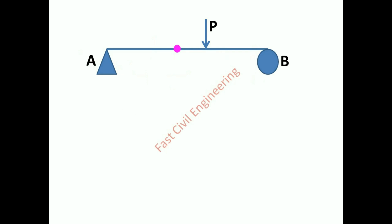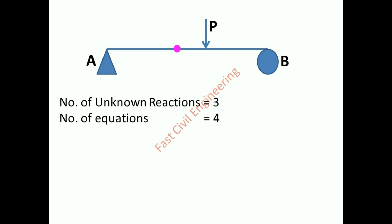Consider this structure. Number of unknown reactions equals three. Number of equations equals three plus one equals four. Number of equations exceeds reactions — unstable condition.